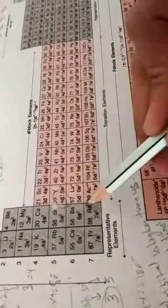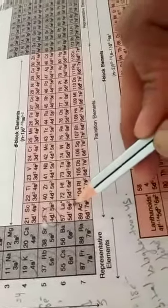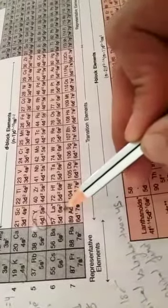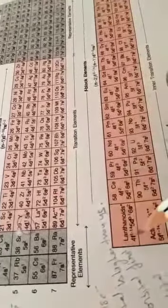You must have seen here, see, in 6th period, first we filled 2 in 6s. After that we had to fill 4f. Here first we have 4f, after lanthanum 4f. Lanthanum's configuration is this. After lanthanum we had to fill 4f. See, all 4f is filled here. Here 4f is complete. After that what will come?